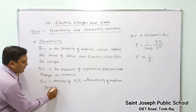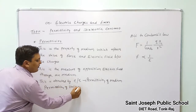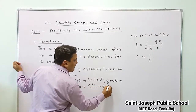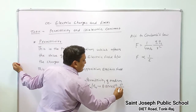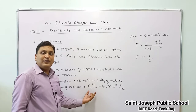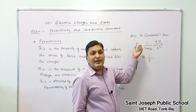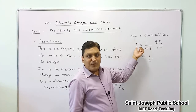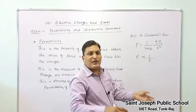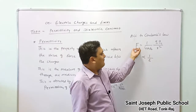The permittivity of vacuum is denoted by epsilon naught and its value is 8.854 into 10 to the power minus 12 coulomb square per newton per metre square. This value is the minimum value of permittivity. So if charges are placed in vacuum, there will be maximum force between them, because epsilon naught is the smallest possible permittivity value.